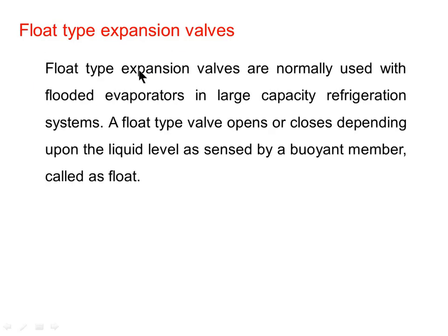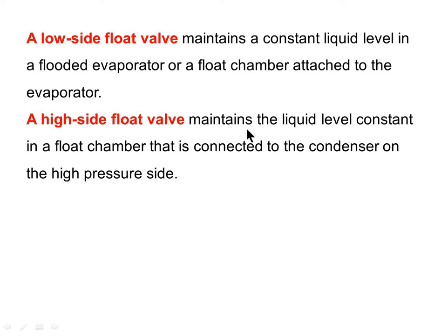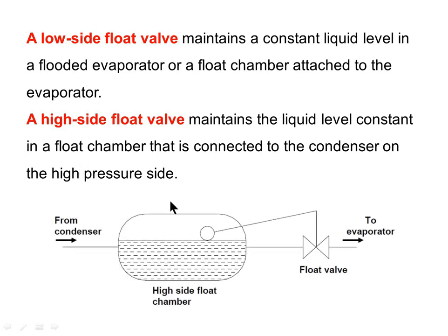Float type expansion valves are normally used with flooded evaporators in large capacity refrigeration systems. A float type valve opens or closes depending upon the liquid level as sensed by a buoyant member called a float. These are classified as low side float valves and high side float valves. A low side float valve maintains a constant liquid level in a flooded evaporator or a float chamber attached to the evaporator. A high side float valve maintains the liquid level constant in a float chamber connected to the condenser on the high pressure side, as shown in the diagram.